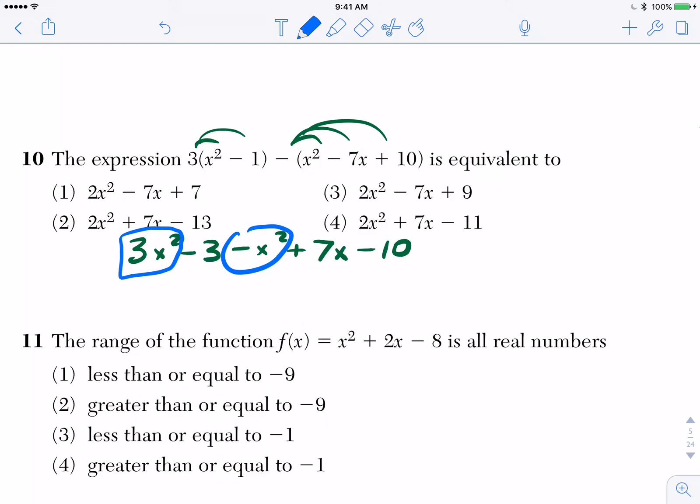So my x squareds, I have 2x squared, because I have 3 minus 1. My x is just 7x. And my constant terms, I have negative 3 and negative 10, which if added or combined correctly should give me negative 13 for choice 2.